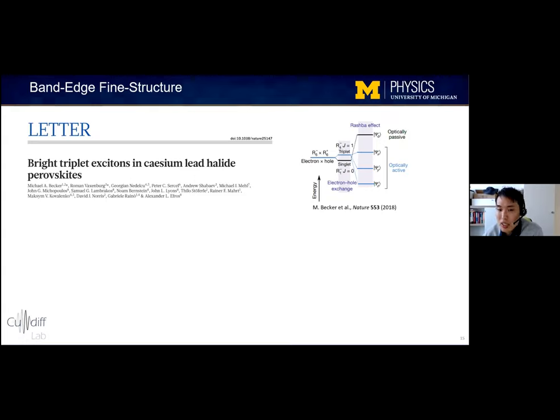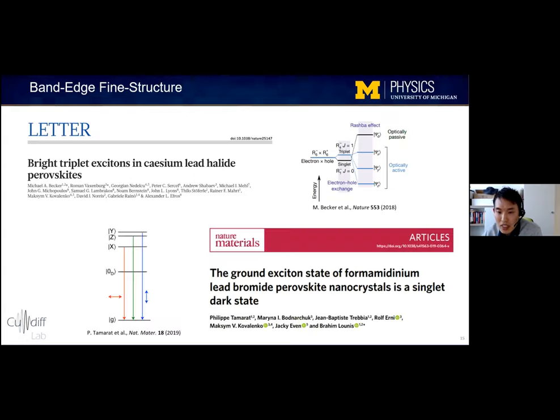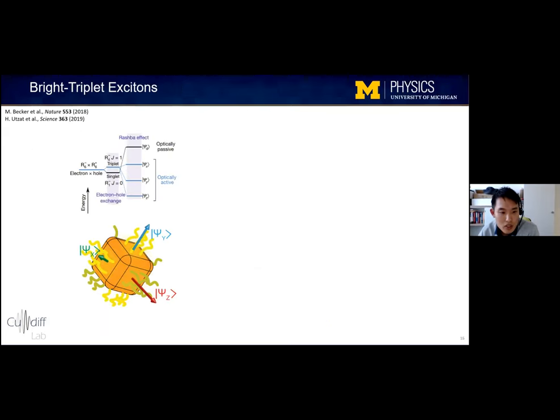And this was really exciting because this meant that excitons being generated in this material could directly emit light, instead of first relaxing into an intermediate dark state with a long radiative recombination time. But in 2019, I should say, another paper was published that performed magneto PL spectroscopy on perovskite nanocrystals, where they also presented pretty convincing evidence that the lowest exciton state in their nanocrystals was in fact dark. So this caused quite a controversy in the field and was one of the motivations for us to apply 2D spectroscopy towards studying the exciton fine structure of perovskite nanocrystals.